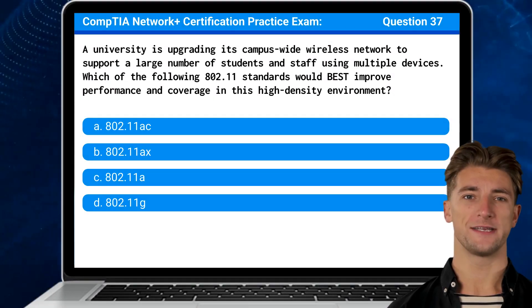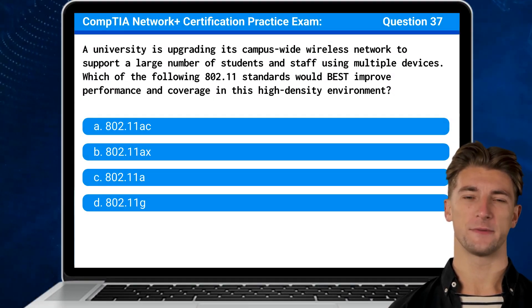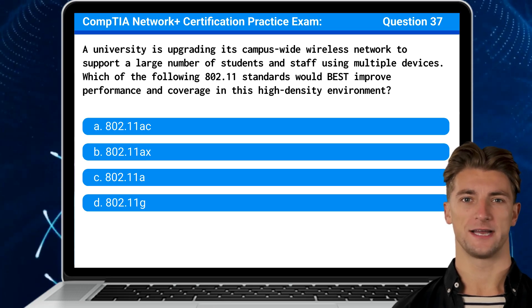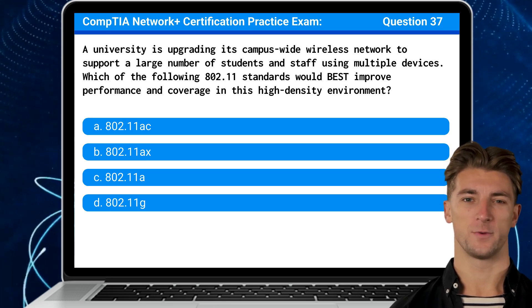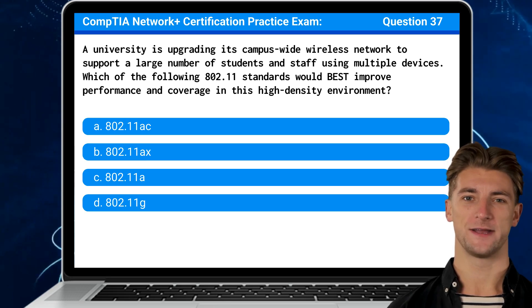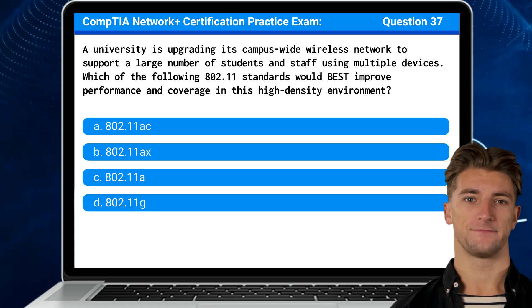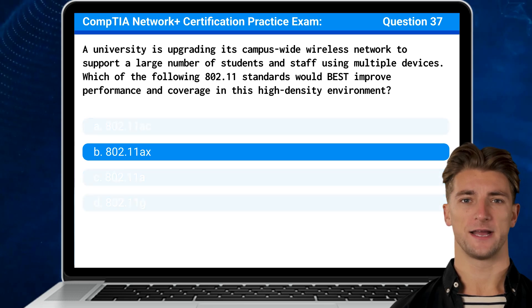Question 37: A university is upgrading its campus-wide wireless network to support a large number of students and staff using multiple devices. Which of the following 802.11 standards would best improve performance and coverage in this high-density environment? The answer is B: 802.11ax.